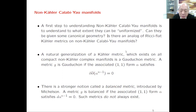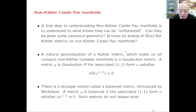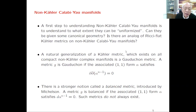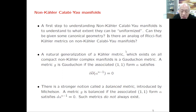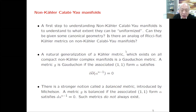A stronger notion is called a balanced metric, introduced by Mary-Louise Michelsohn about 45 years ago. A Hermitian metric is called balanced if the associated (1,1)-form alpha satisfies the stronger condition that alpha to the power of n minus one is a closed form. A closed form is stronger than d-d-bar closed because a closed form implies d-d-bar closed. This metric in general does not exist on every complex manifold.